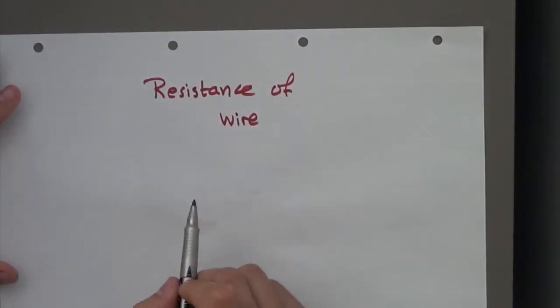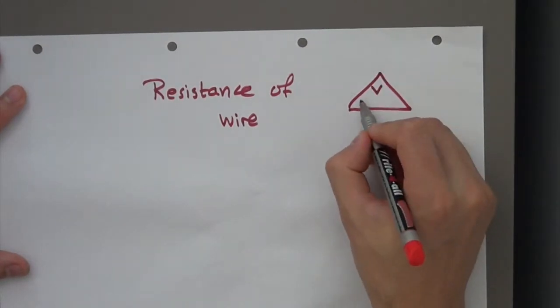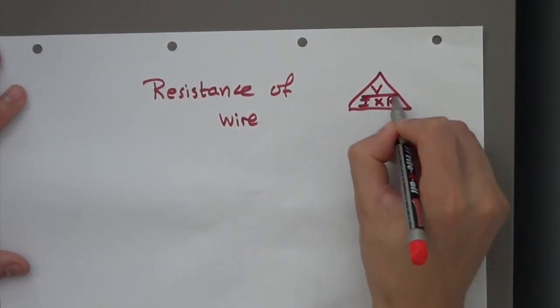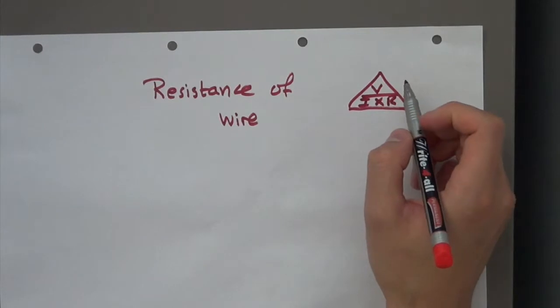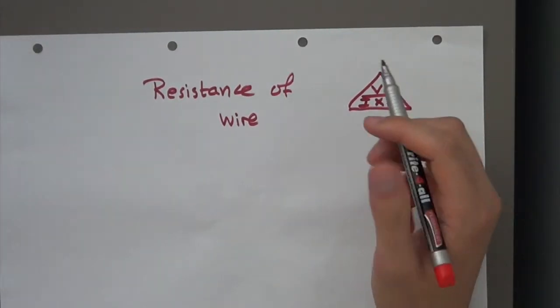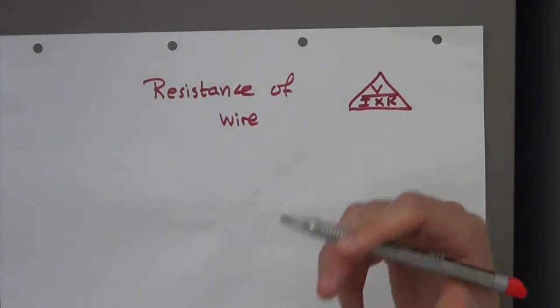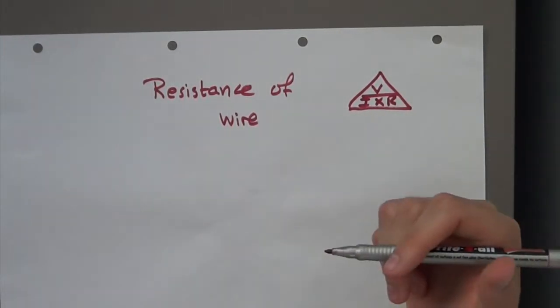First of all, you have seen resistance in these equations - V equals I times R. And I've told you resistance is basically the opposition of charge. It basically resists charge.